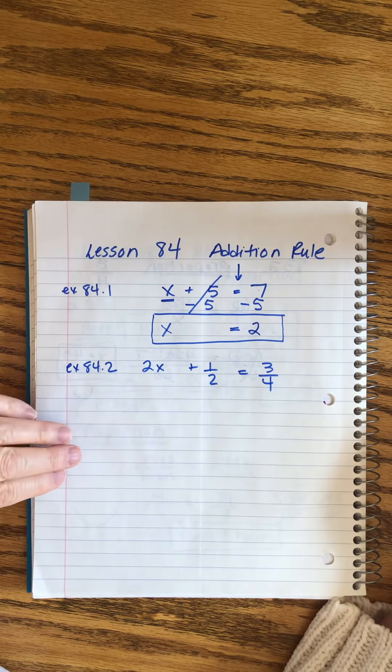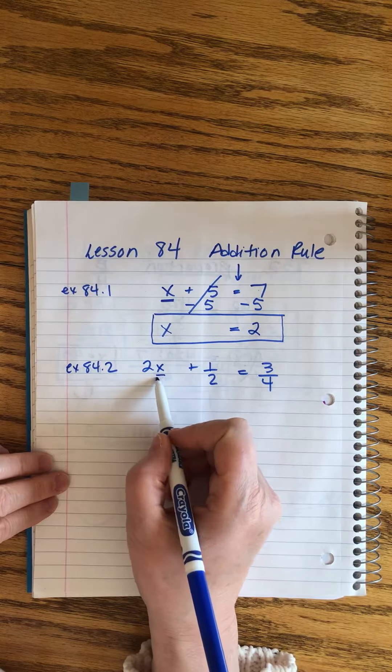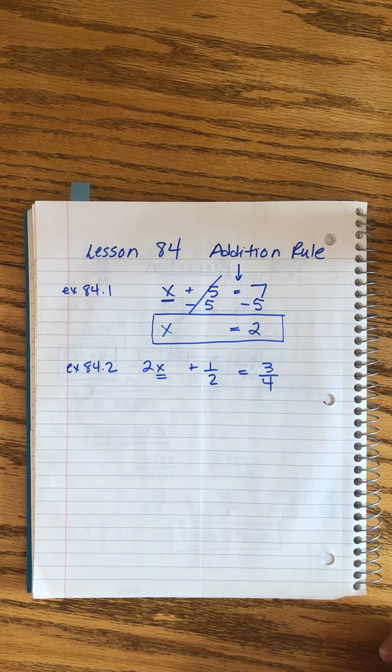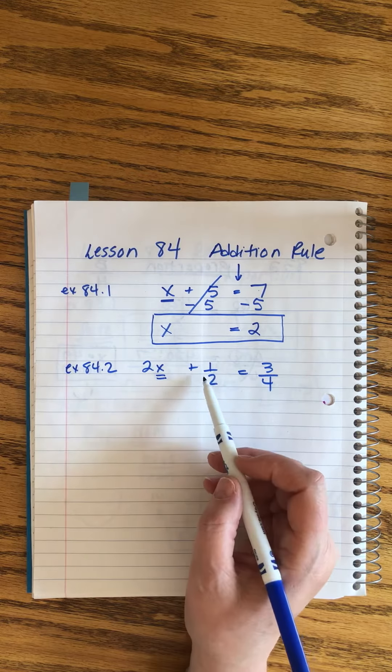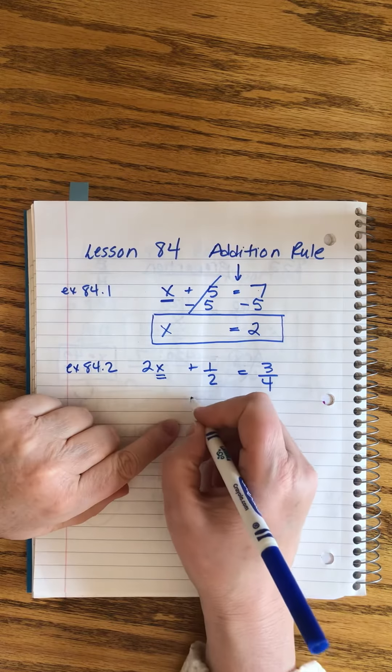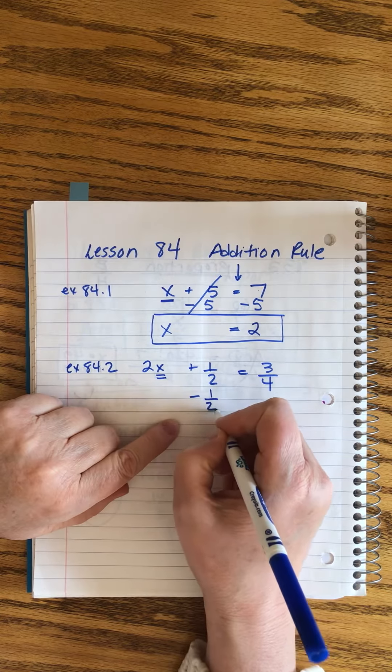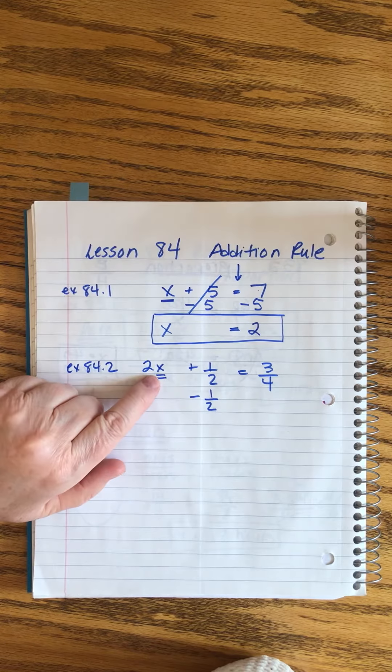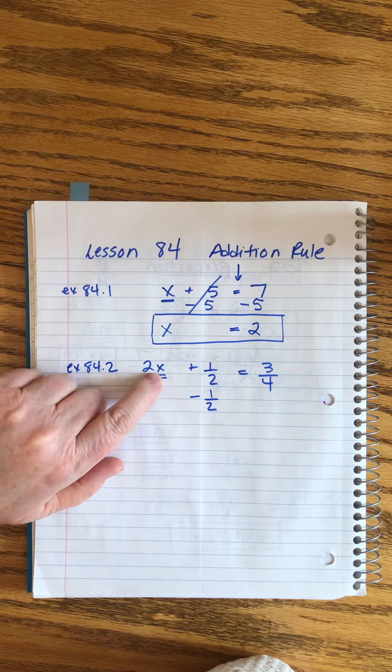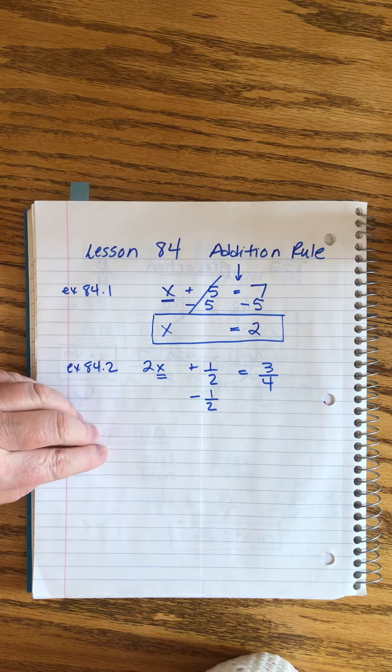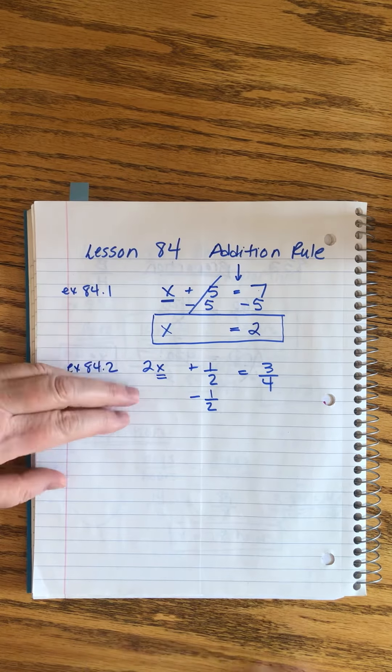Same thing for our x. We want to do whatever is attached to it. There's two things attached to it. This one we'll deal with first. This is the thing where you have two friends over and you're closer friends with one than the other. This is your closer friend, so you send the other friend home first. So we're going to subtract one-half, and we're going to do it from both sides.